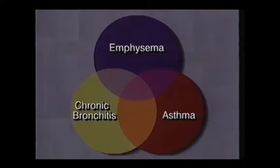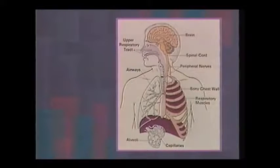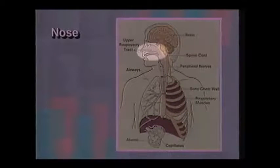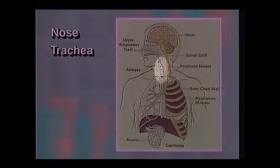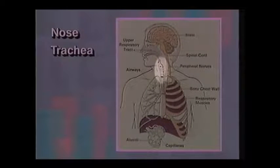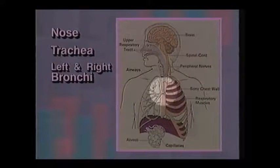To better understand these disorders, a look at the respiratory system in the normal lung will be helpful. Here are the components of the respiratory system. The nose filters, warms, and humidifies the air. The trachea, which is known as the windpipe, branches off into the right and left main stem bronchi.